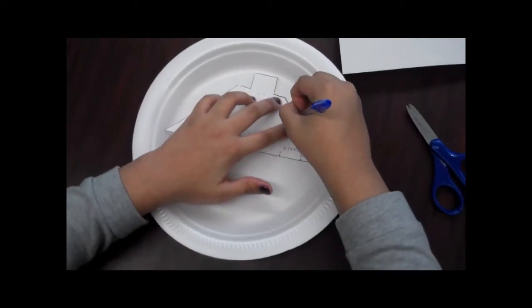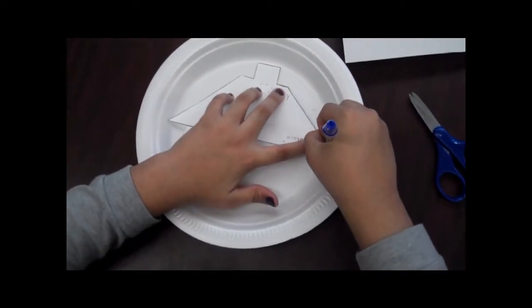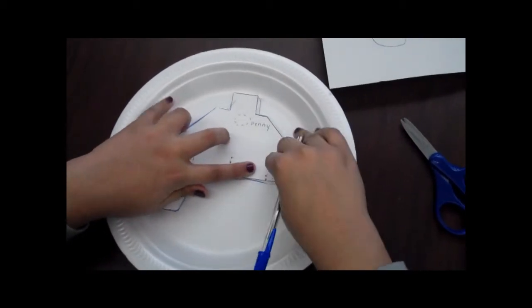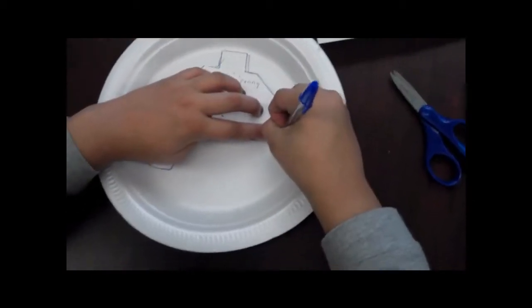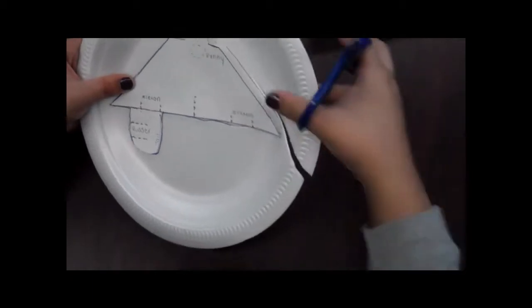Next, trace the glider on the plate. Press down the pen on the template where you see the dotted lines to make indents in the foam. Cut out the glider.